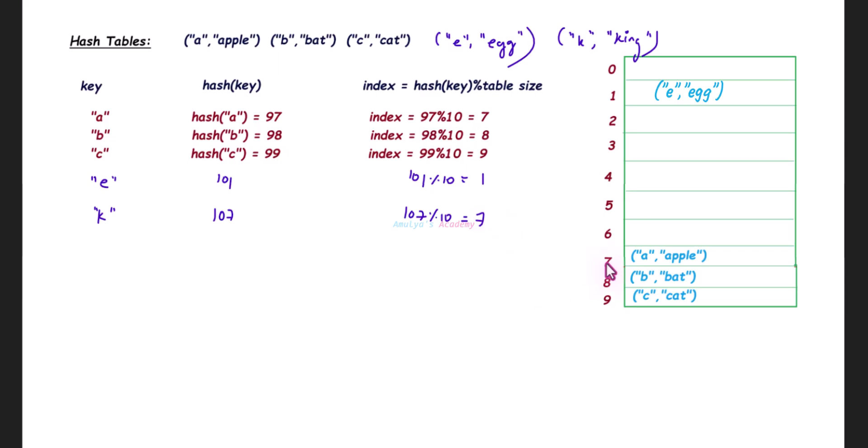There is a collision, so you can use a collision resolution technique like I explained in the previous tutorial. You can use the chaining method or open addressing method. If you want to use chaining method, we'll add this key-value pair to index 7, and these values are chained together using a linked list or any other data structure.